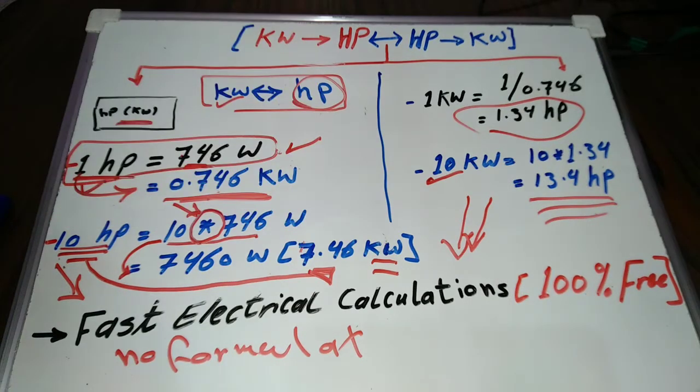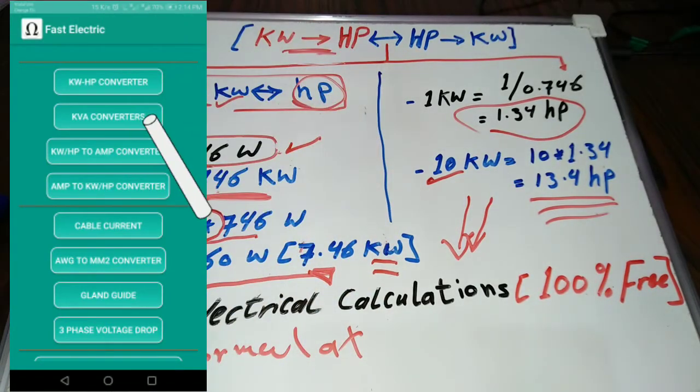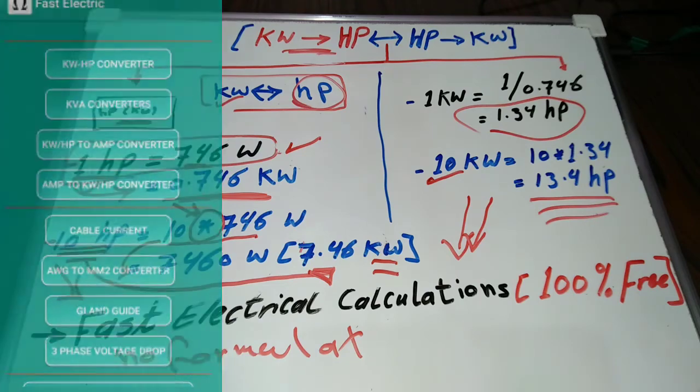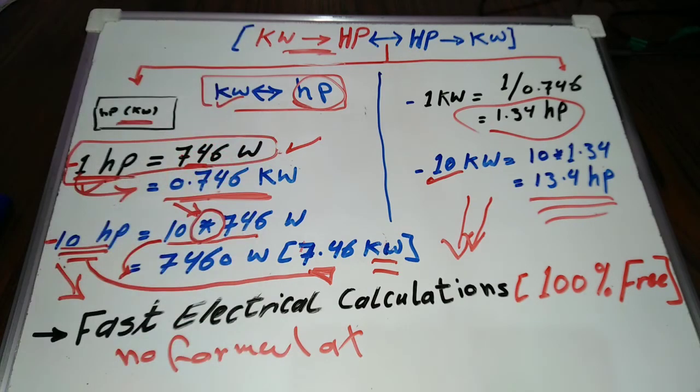It has many easy to use electrical calculations, like kilowatt to horsepower converter, kilovolt ampere calculations, motor current calculations, and many more. The application is 100% free on Google Play Market. You can find its link in the description below.